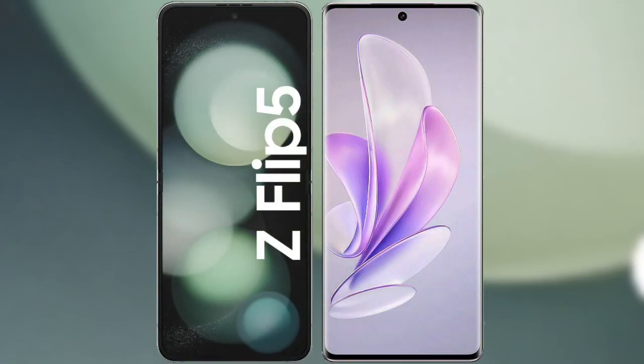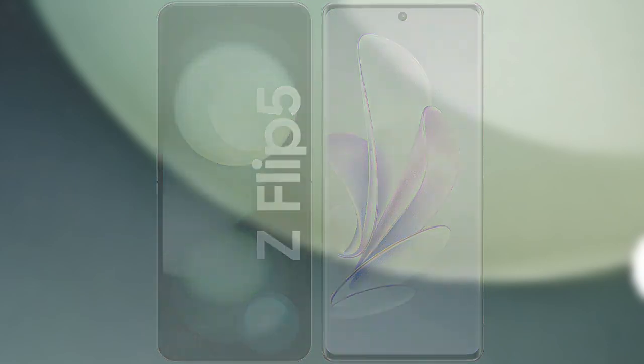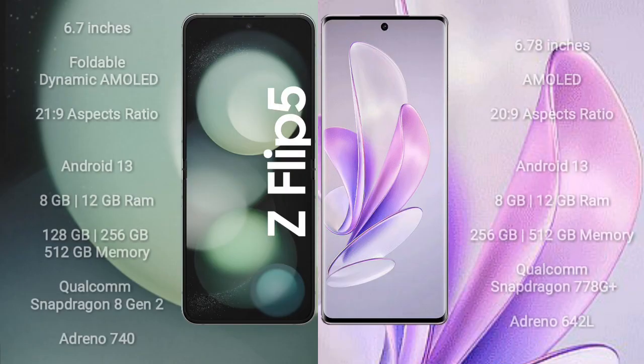I will compare the new Samsung Galaxy Z Flip 5 with Vivo A70. Samsung Galaxy Z Flip 5 comes with a 6.7-inch foldable dynamic AMOLED display and aspect ratio 21:9. Vivo A70 comes with a 6.78-inch AMOLED display and aspect ratio 20:9.